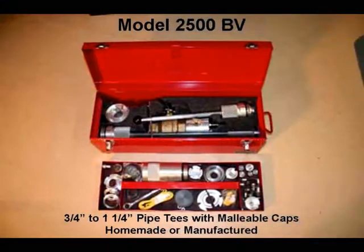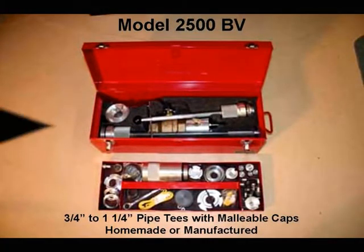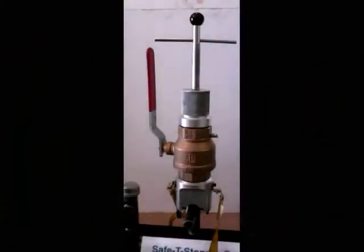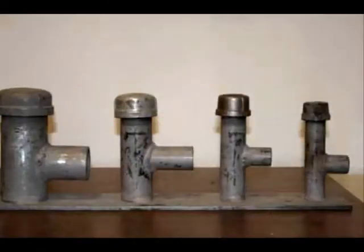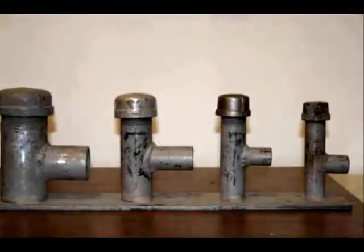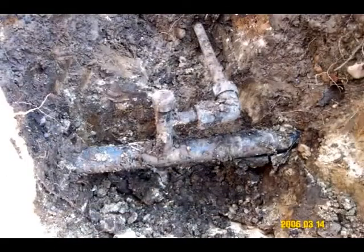The safety stopper toolkit model 2500BV is specifically used for gas-free service tee renewal or removal on three-quarter to inch and a quarter manufactured or homemade open gut pipe tees with malleable caps operating up to 80 PSI. The overall operation is simple.